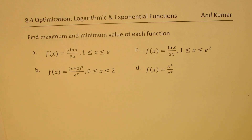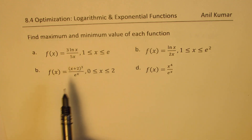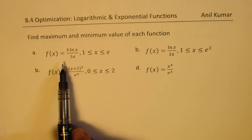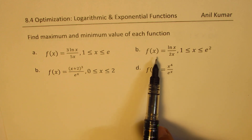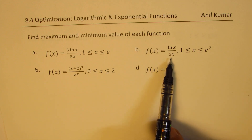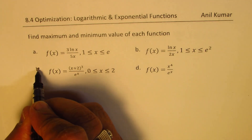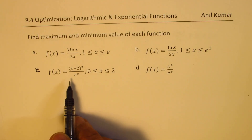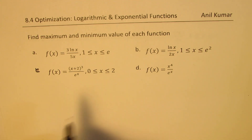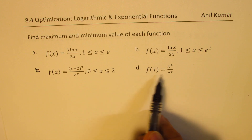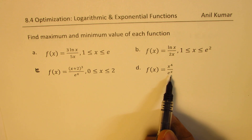Here we have four examples. The question is: find the maximum and minimum value of each function. A: f(x) = 3ln(x)/5x when x is between 1 and e. B: f(x) = ln(x)/2x when x is between 1 and e². C: f(x) = (x+2)³/eˣ when x is between 0 and 2. And D: f(x) = x⁴/eˣ on an open interval.